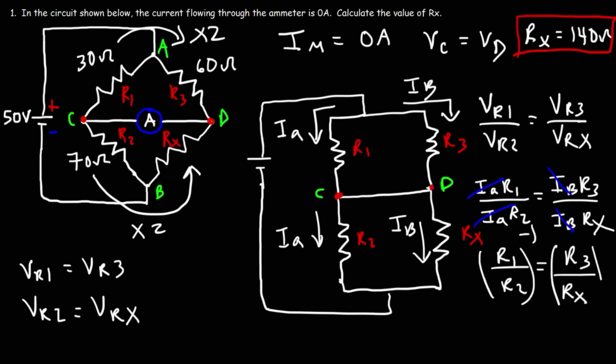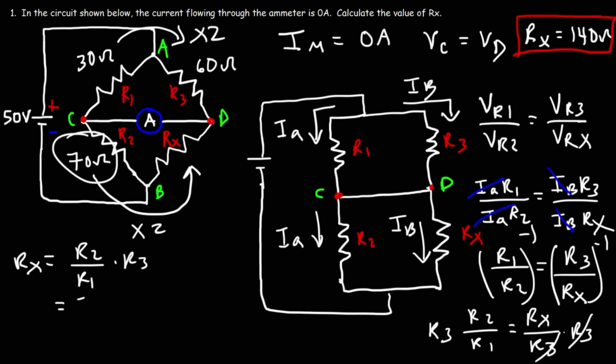If we raise both sides to the negative one power, we can flip the two fractions. So we get R2 over R1 is equal to Rx over R3. Multiplying both sides by R3, we can isolate Rx, giving us this formula. So Rx is going to be R2 over R1 times R3. In this example, R2 is 70, R1 is 30, and R3 is 60. So we could divide first. 60 divided by 30 is 2, and then 2 times 70 is 140. So that's how you could show your work to get the answer. So that's how you can calculate the missing resistor in a balanced condition.